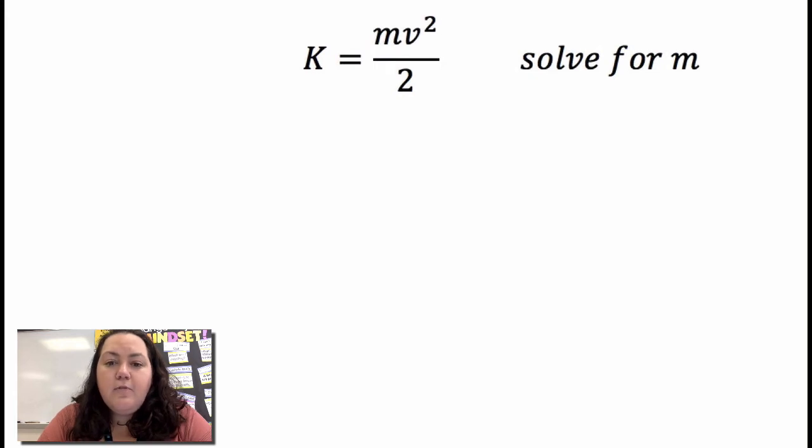K equals mv squared over 2. They want us to solve for m. I can go ahead and get rid of that 2 and everything is dividing by 2, so I'm going to go ahead and do the opposite which would be multiply both sides by 2. That cancels, I get 2k equals mv squared.